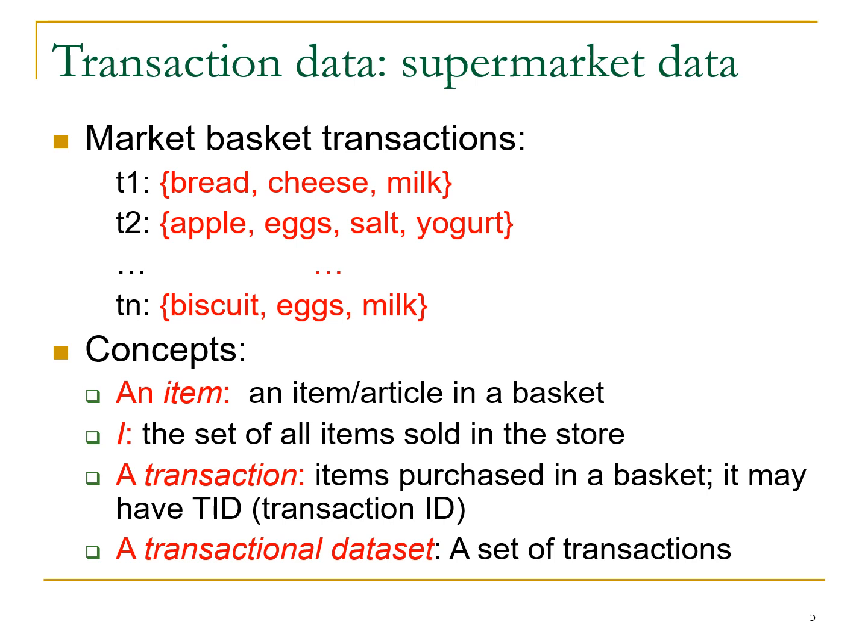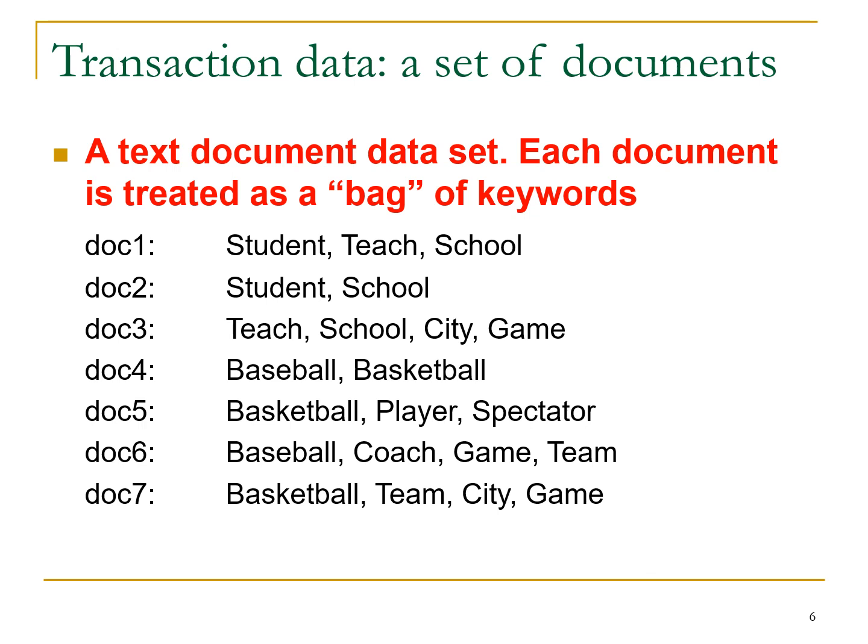A transaction is a particular set of items purchased in a basket, and it usually has a transaction ID as a primary key — which must be unique and not null. A transaction dataset is a set of transactions. We can extend beyond supermarkets: for example, a school dataset where attributes include student, school, games, basketball, baseball, player, spectator, coach, game, team, library, etc. Any relevant attribute can be substituted.